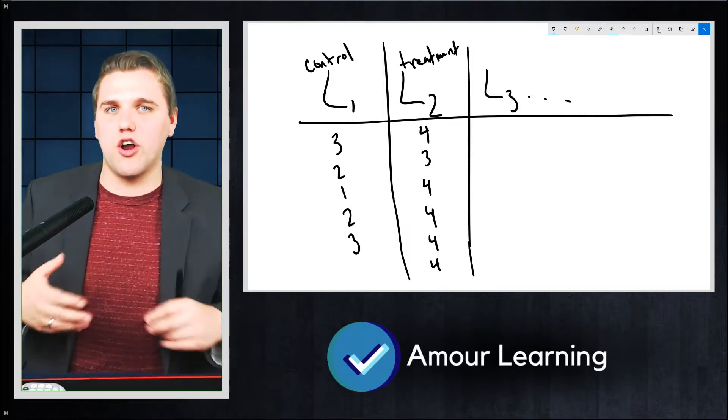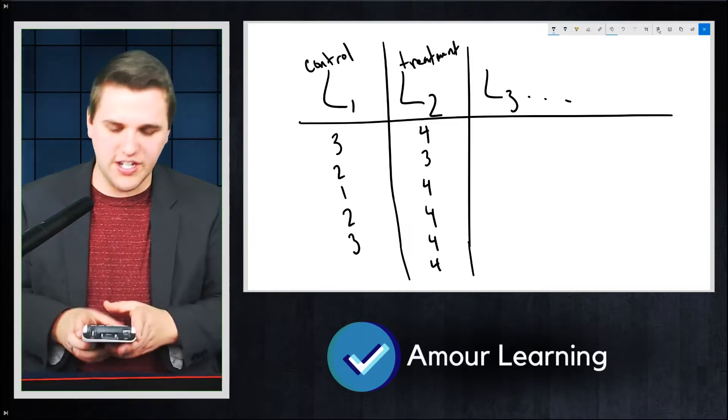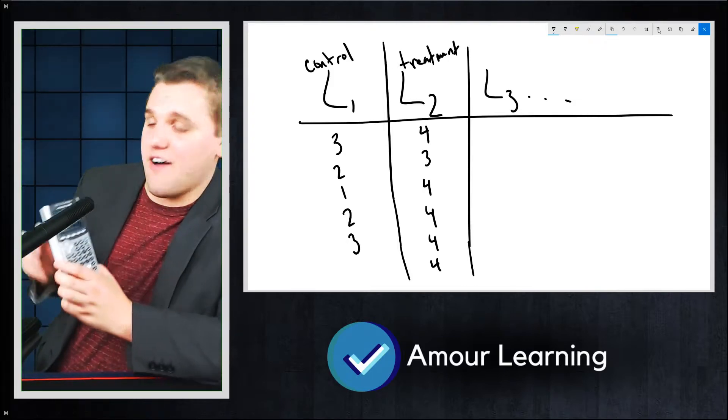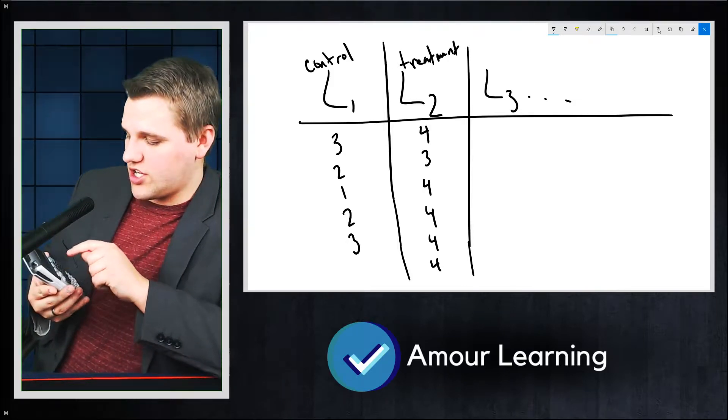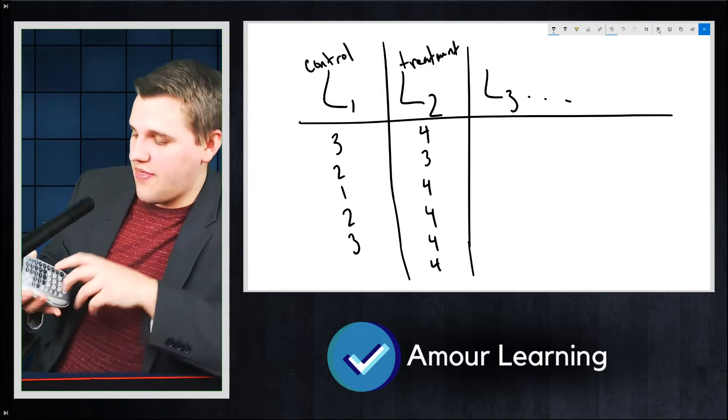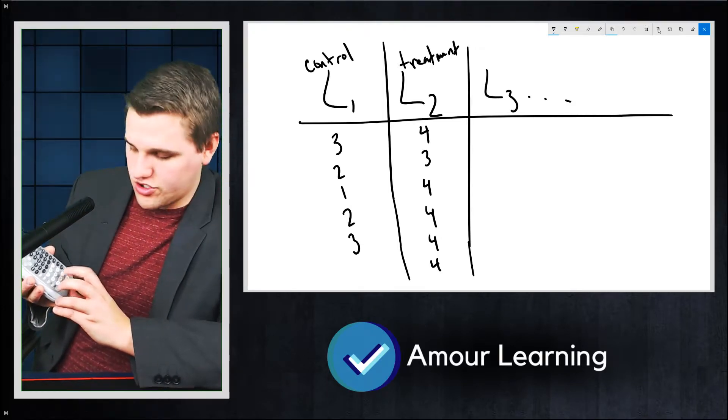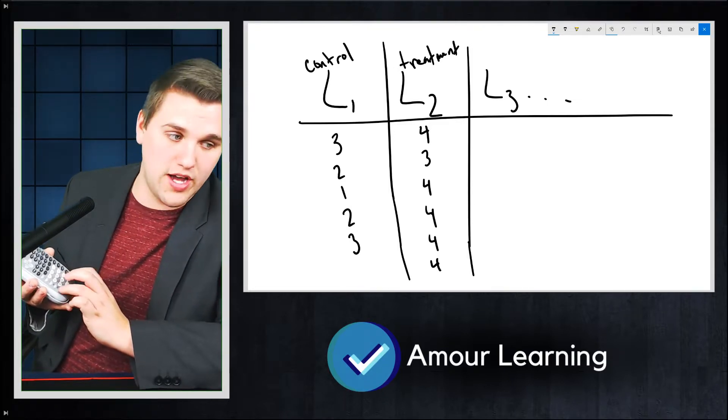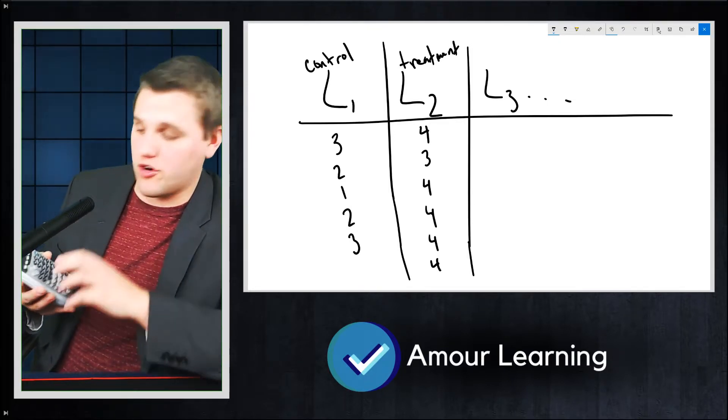So you have two samples, and you want to know whether or not these are different from each other. Now if you already have numbers in your list, you can just hit delete over and over again to delete those numbers from the list. And then you just enter in those numbers. You hit 3, enter, 2, enter, 1, enter, 2, enter, 3, enter for the first sample.